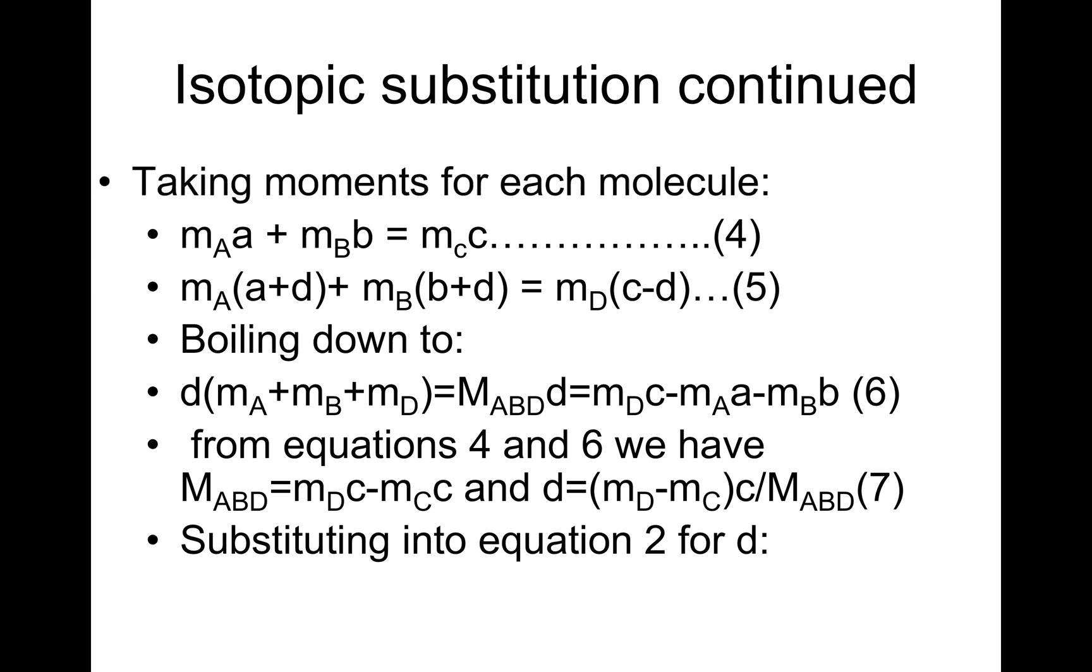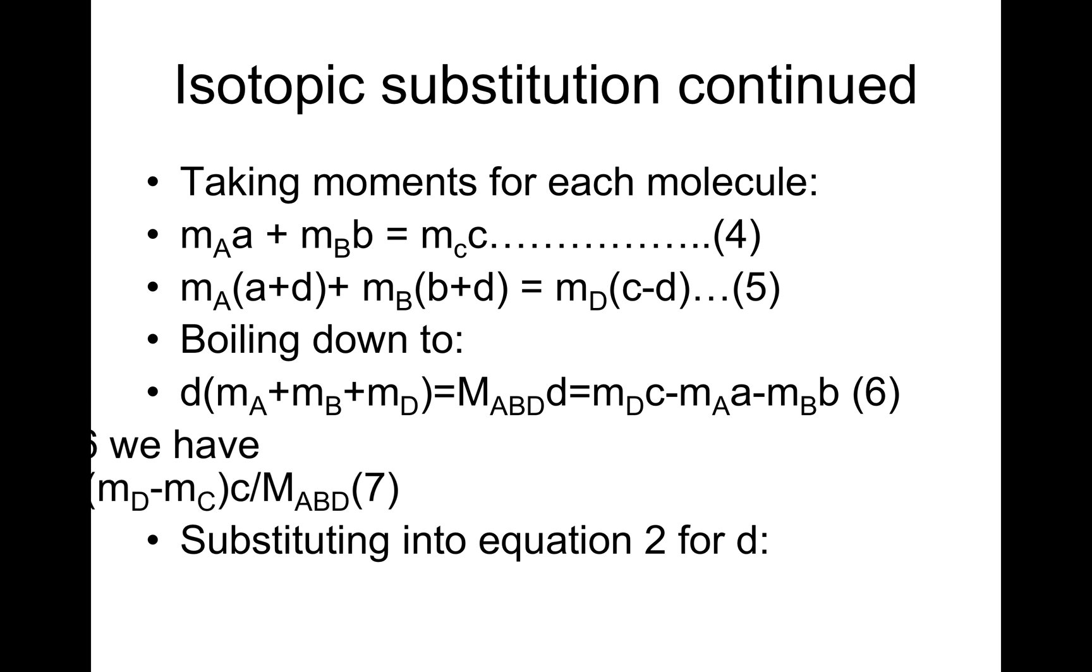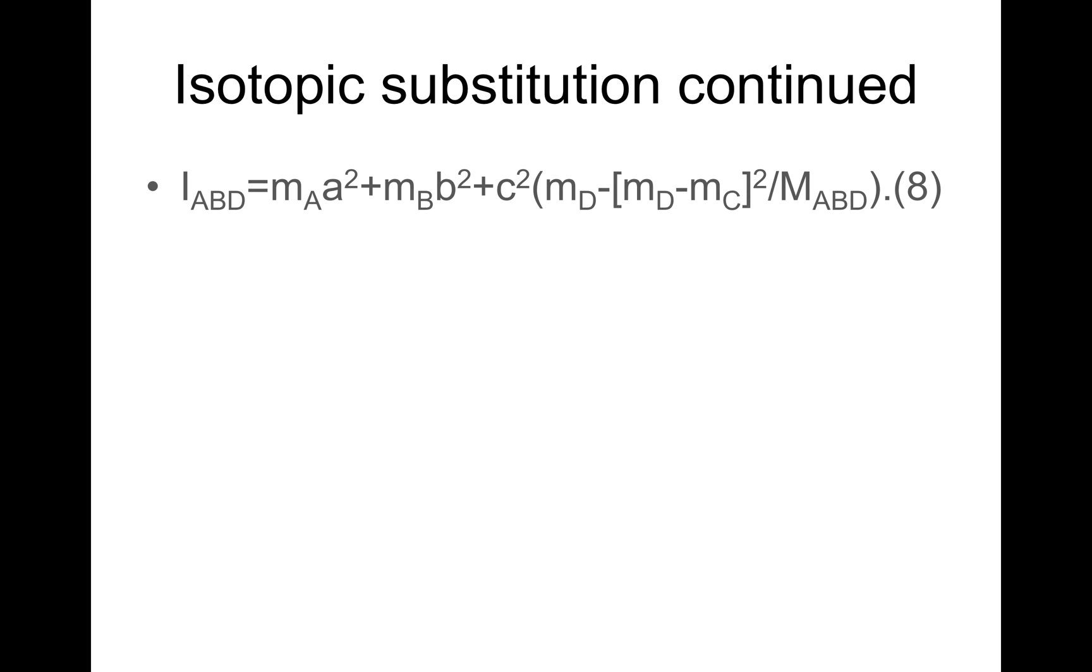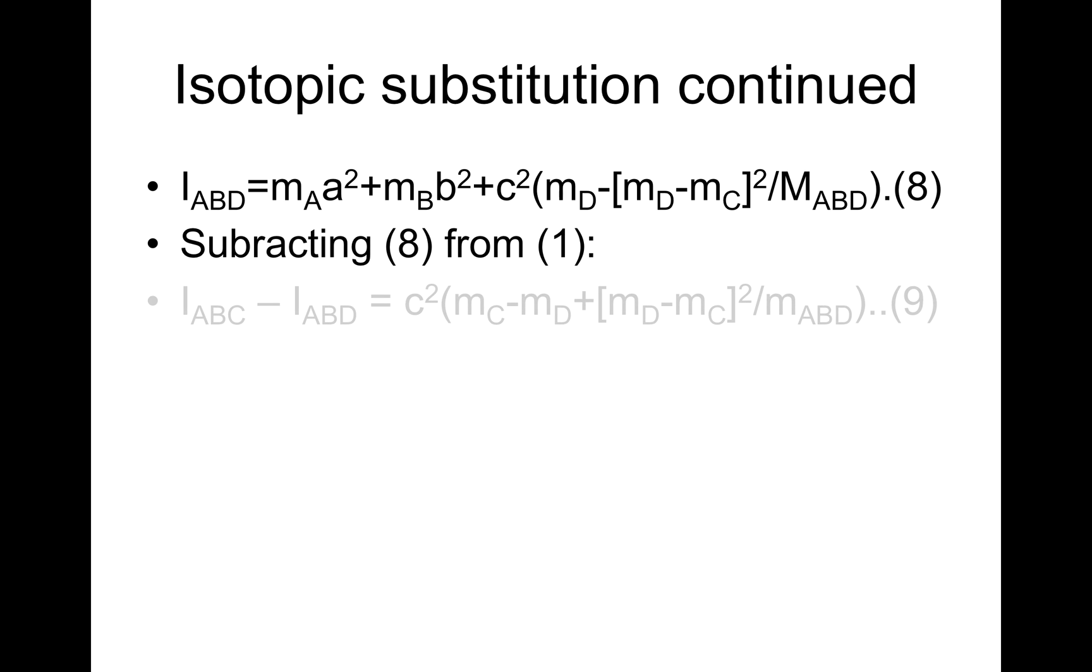That's equation 7. Substituting into equation 2 for D, we have I_ABD, that's the moment of inertia of ABD, is equal to m_A*a² + m_B*b² + c²*(m_D - (m_D - m_C)²/M_ABD). That's equation 8. Subtracting 8 from 1, we have I_ABC - I_ABD. That's the difference between the two moments of inertia.